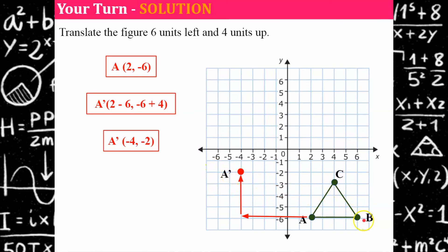Then vertex B — go left six, up four — and there is B prime. I take C, go to the left six, then up four, and there is C prime at (−2, 1).